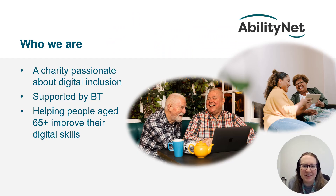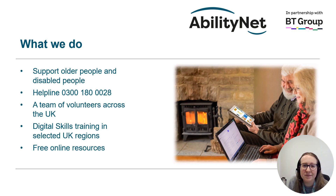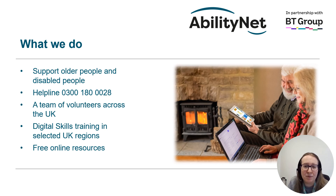At AbilityNet we're a charity passionate about digital inclusion, ensuring no one is left behind in a digital world. We help people age 65 plus to improve their digital skills in partnership with the BT Group. At AbilityNet we support older people and disabled people with technology. We have a helpline on 0300 180 0028 where anyone older or disabled can call for advice on technology. We have an amazing team of over 450 tech volunteers across the UK who give up their free time to help older and disabled people at home with their technology, and in partnership with BT we're offering digital skills training in selected regions across the UK.